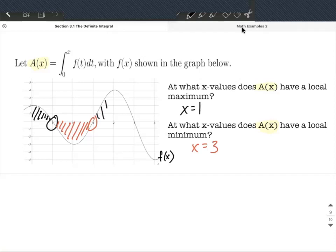We're back to increasing on this side, right above the x-axis for the derivative until we get to 5. So we get another local maximum at 5.